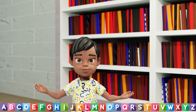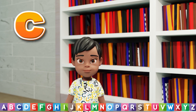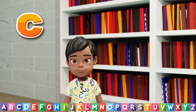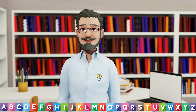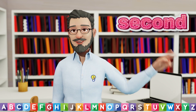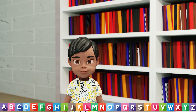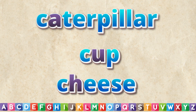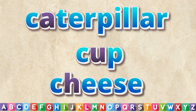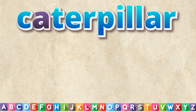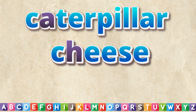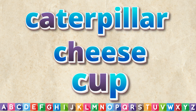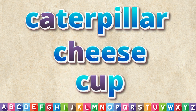Oh! All these start with the same letter C. Now what will I do? In this case, you will need to look at the second letter of each word. Okay, let me see. We have A first, and then H, and last of all U. So the correct order is caterpillar, cheese, cup. Very good, Veer.